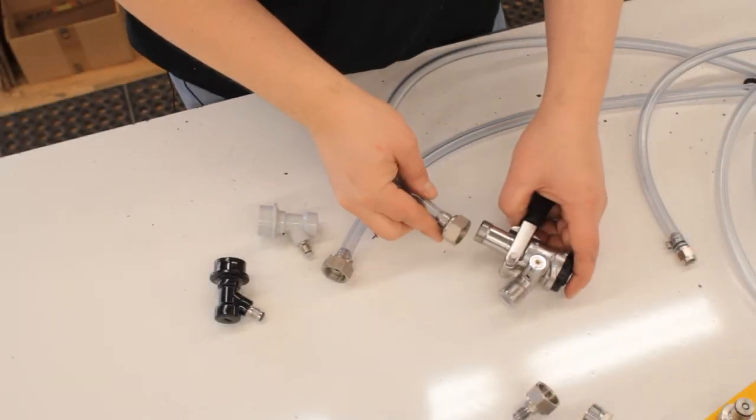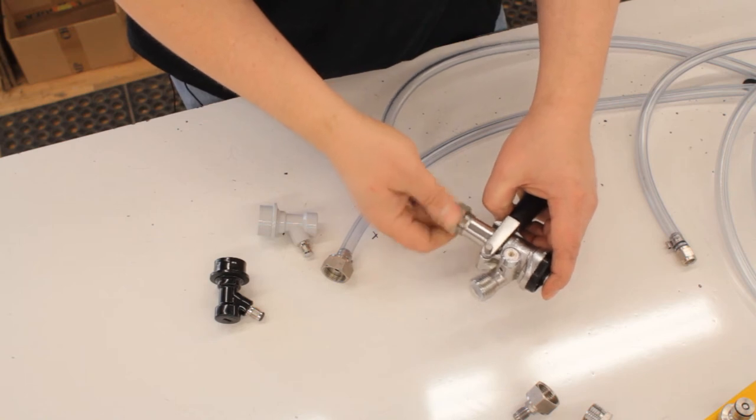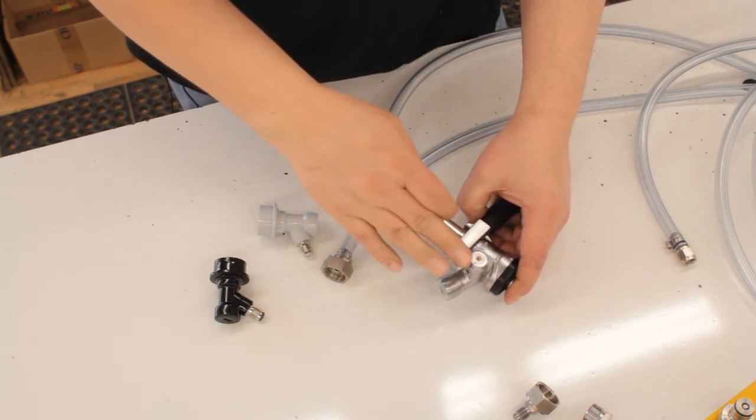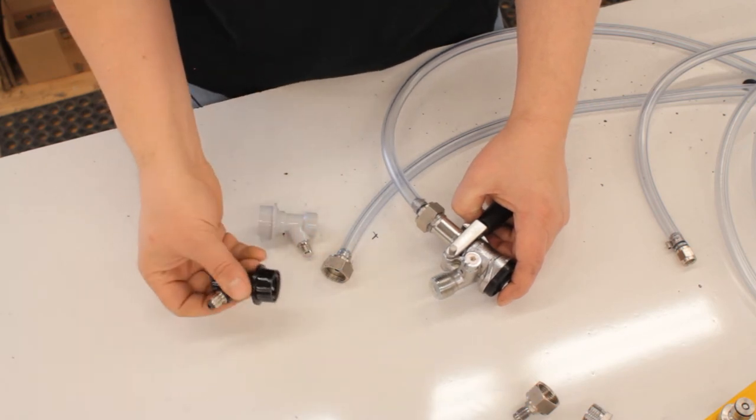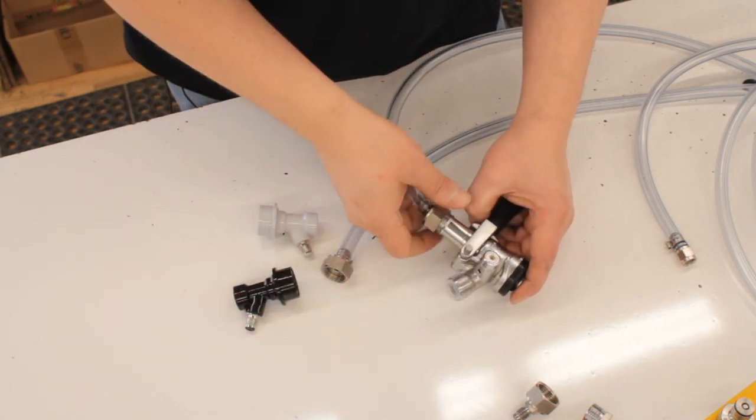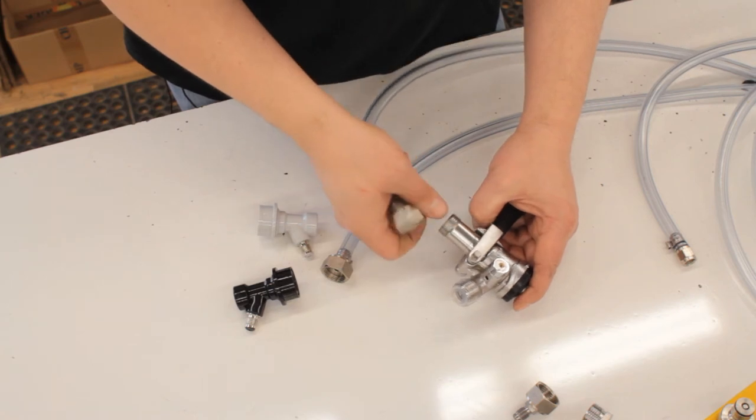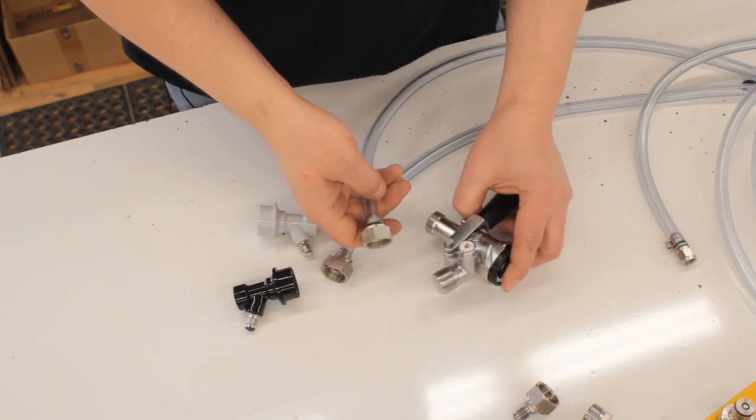So let's say that you have a kegerator that's already set up for commercial dispensing and it's a new idea that you want to dispense homebrew out of it. There are two options for doing that: one is destructive and one is not.